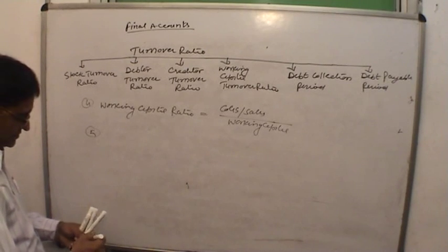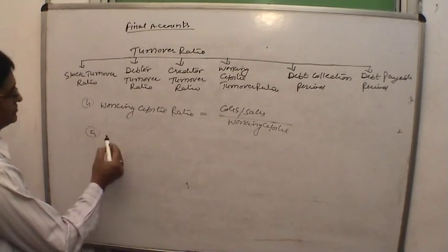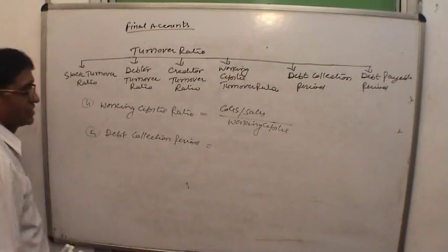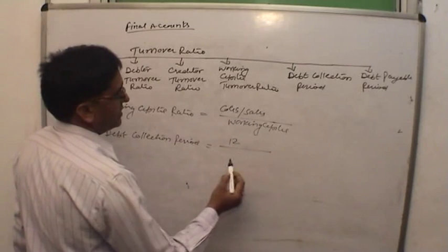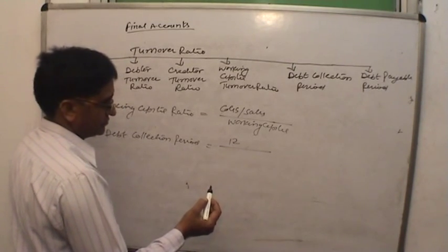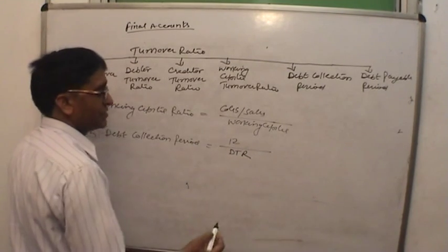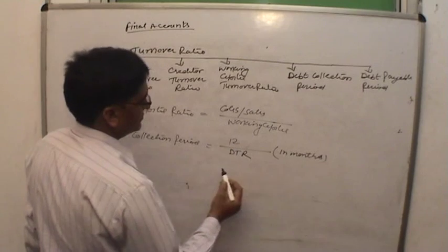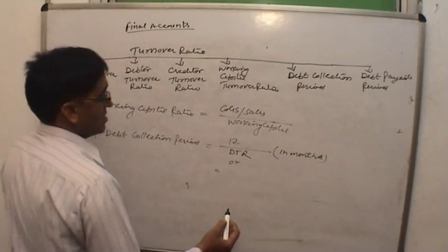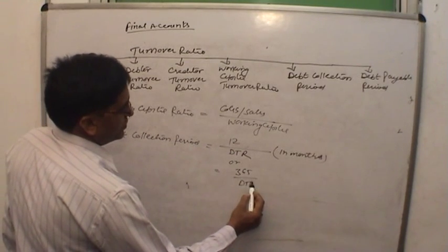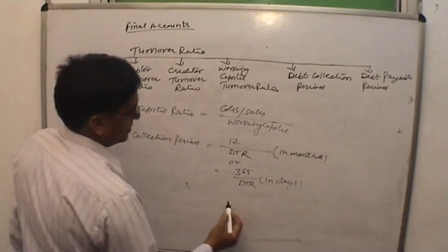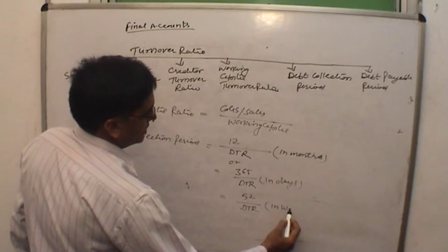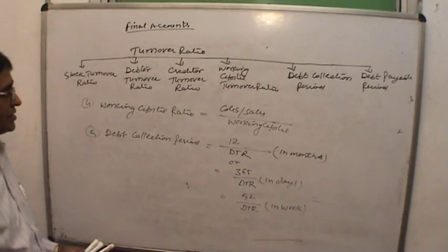Debt collection period equals 12 divided by debtor turnover ratio (DTR) if you want to calculate in months, or 365 divided by DTR if you want to calculate in days, or 52 divided by DTR if you want to calculate in weeks.